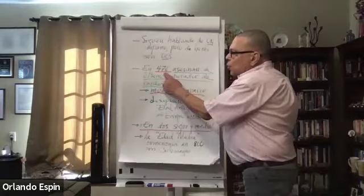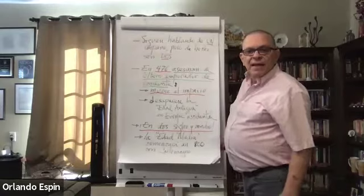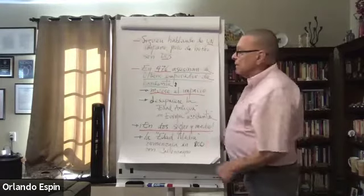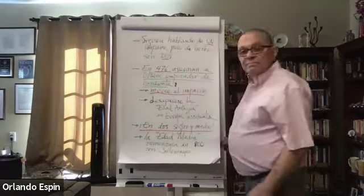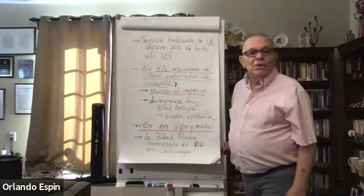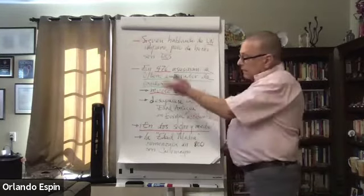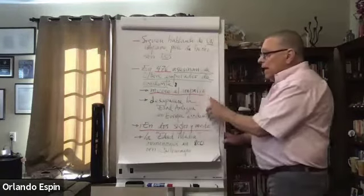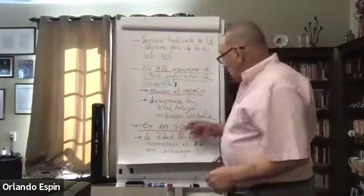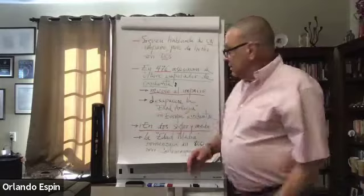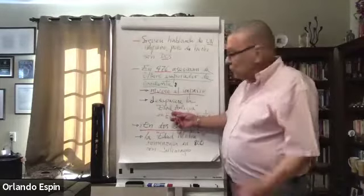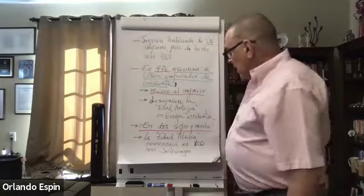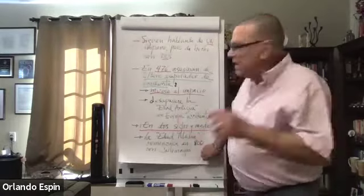En el año 476, al que era en ese momento el emperador en Roma, lo asesinó. Y más nunca vuelve a haber otro emperador romano de esta serie en Roma. Muere el imperio occidente y en Europa occidental desaparece lo que podíamos nosotros llamar o podemos nosotros llamar la edad antigua.